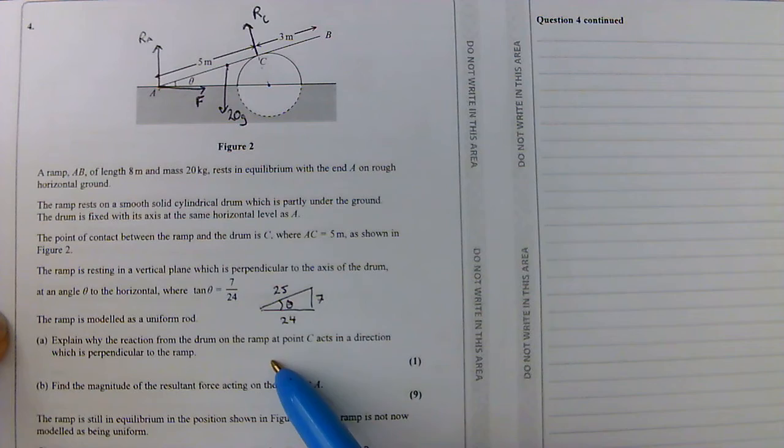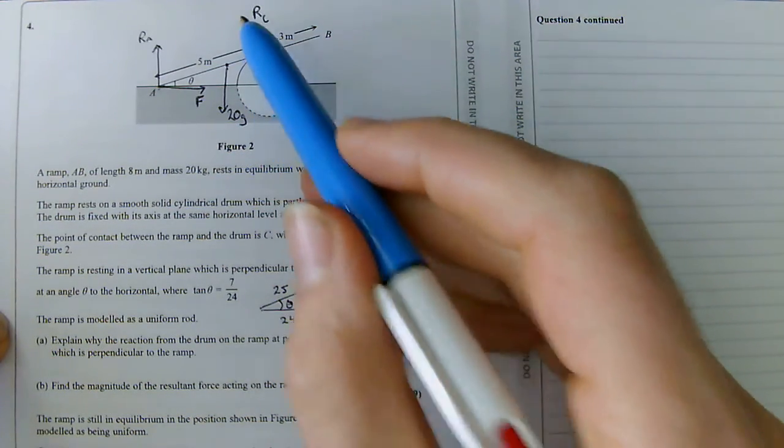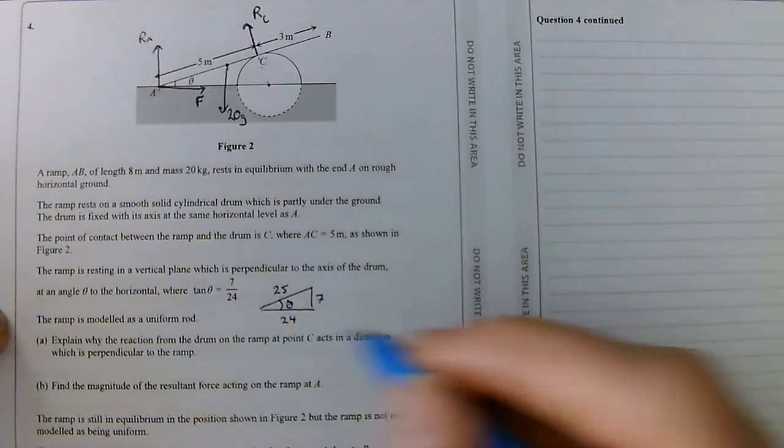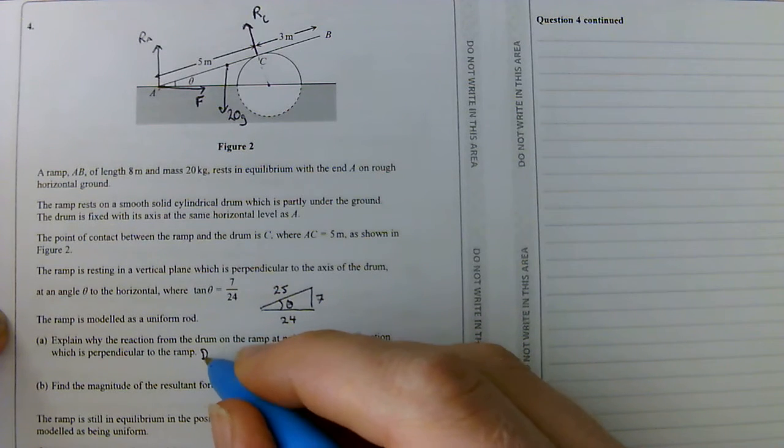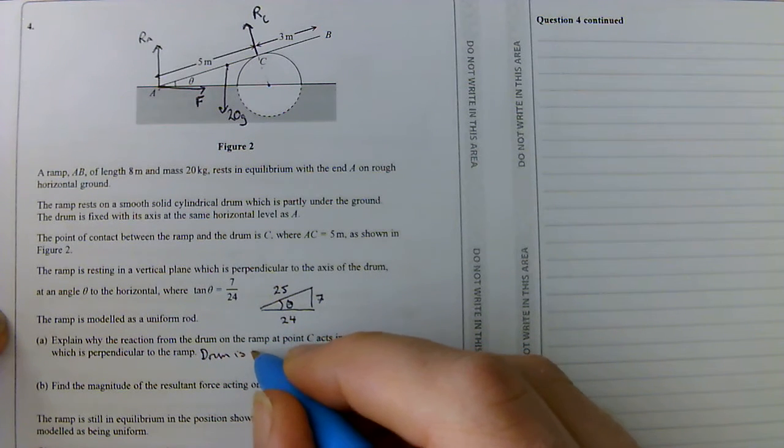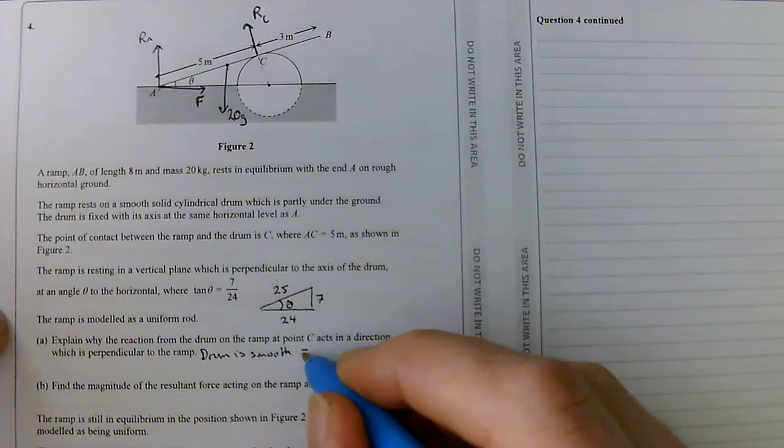It leads us in with a nice one marker. Explain why the reaction from the drum on the ramp at point C acts in a direction which is perpendicular to the ramp. And the answer is, drum is smooth. So the force is perpendicular.